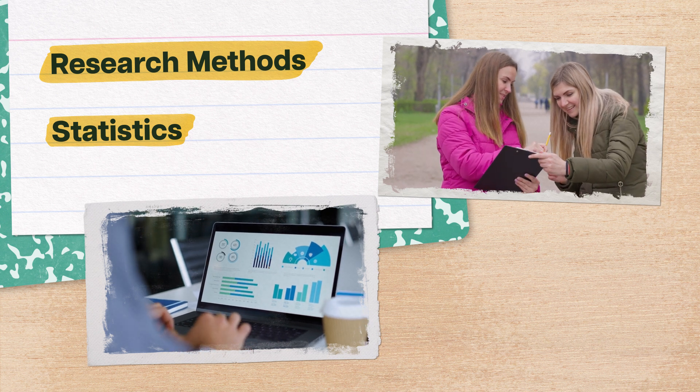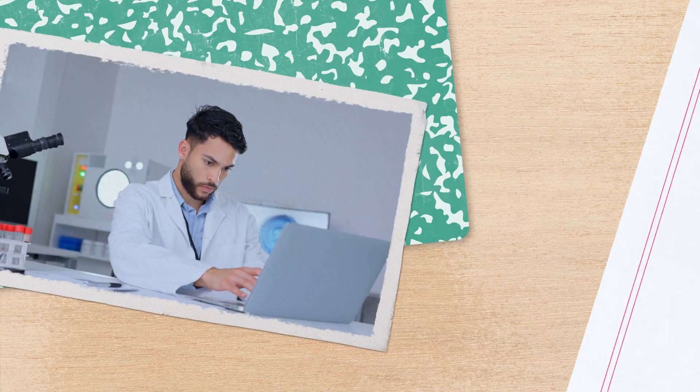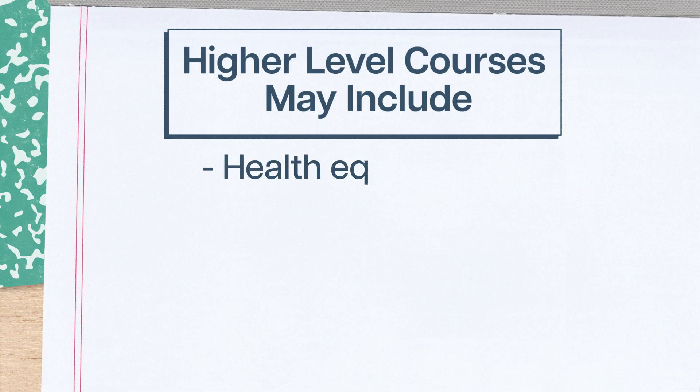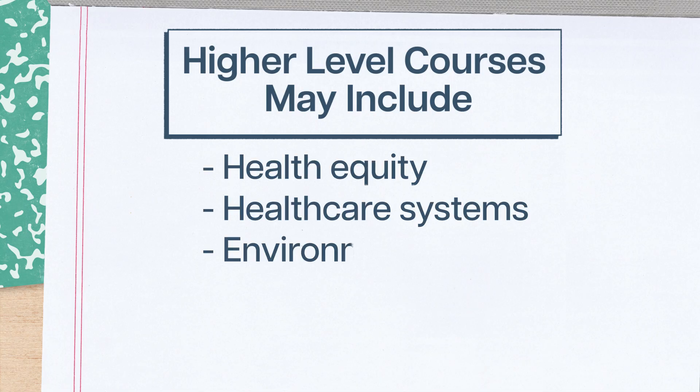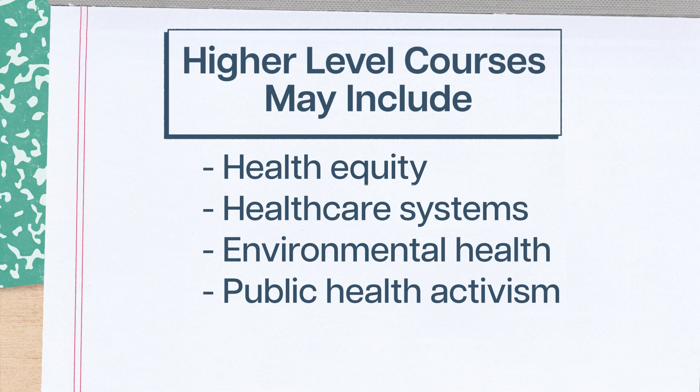But in order to do anything with that information, you'll need to understand all kinds of things about why health problems happen, and what makes them worse, and why some interventions work, and why some don't. Higher-level courses on stuff like health equity, healthcare systems, environmental health, public health activism, and more, will help you understand the hurdles public health faces, like vaccine distribution.